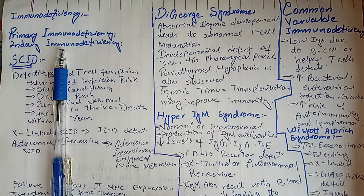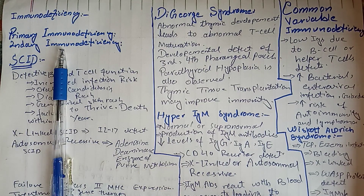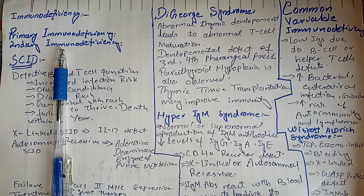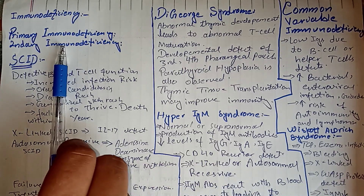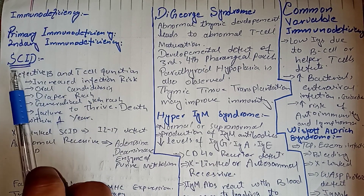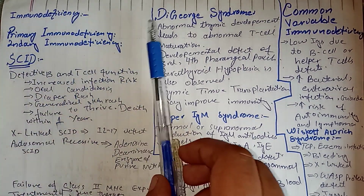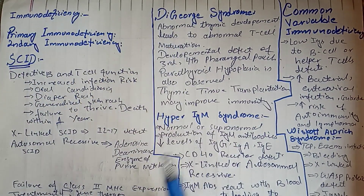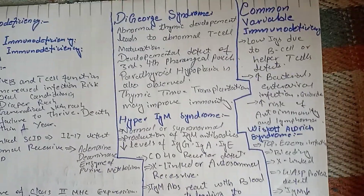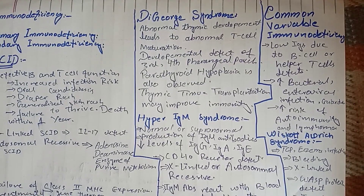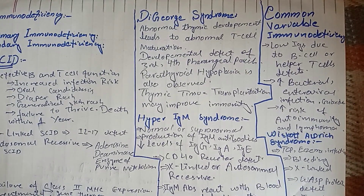Secondary immunodeficiency can be due to HIV/AIDS, which leads to an immunocompromised state, or due to use of immunosuppressants used in autoimmune diseases. Primary immunodeficiencies include Severe Combined Immunodeficiency (SCID), DiGeorge syndrome, Hyper-IgM syndrome, X-linked agammaglobulinemia, Common Variable Immunodeficiency, Wiskott-Aldrich syndrome, and Ataxia Telangiectasia.